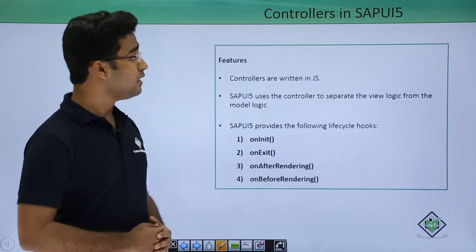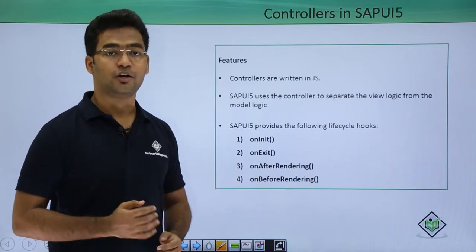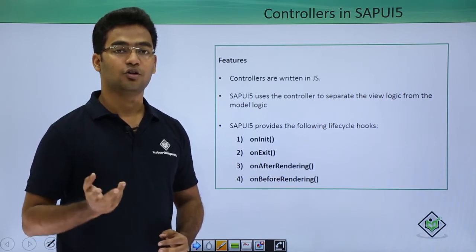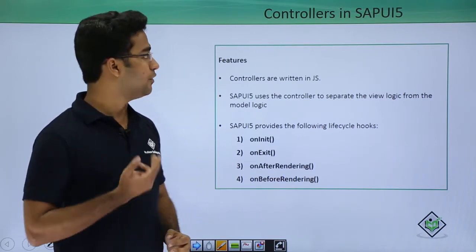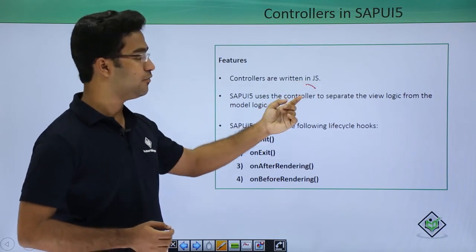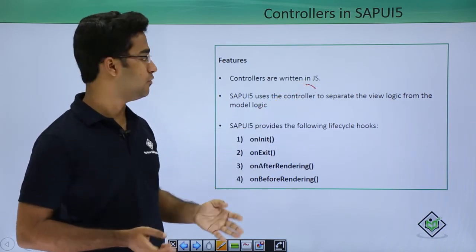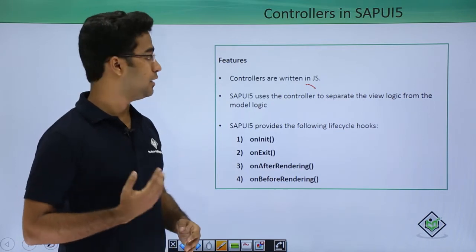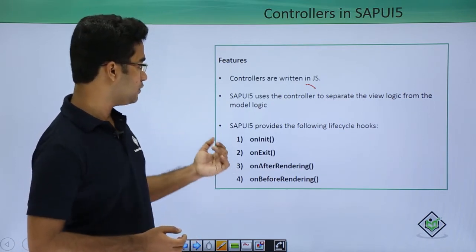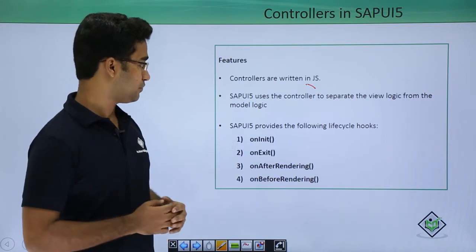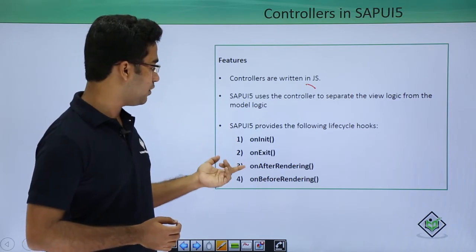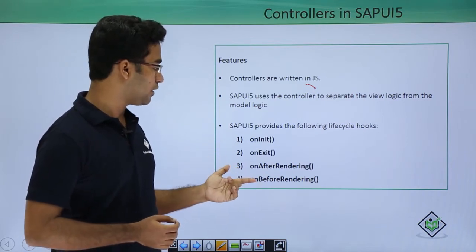Moving on to controllers in sap.ui — what exactly are controllers? Basically we write the coding or the logic for the particular control in the controller itself. We write only in JavaScript. In the view we have these 4 formats in which we can create views, but in controllers we can only create in JavaScript. Then we have 4 lifecycle events: on init, on exit, on after rendering, and on before rendering.